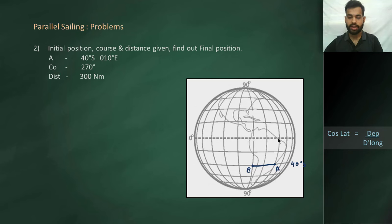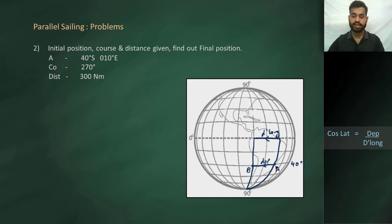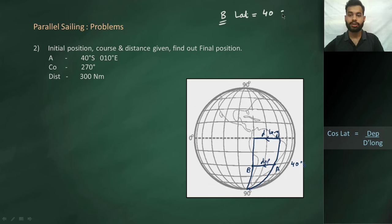Let me connect the meridians of A and B. You can see that this is the departure while this is the D-long. We need to find the latitude and longitude of final position B. As we are sailing on the same latitude and not changing latitude, this is a parallel sailing question. Therefore the latitude of B is the same as latitude of A — 40° South.